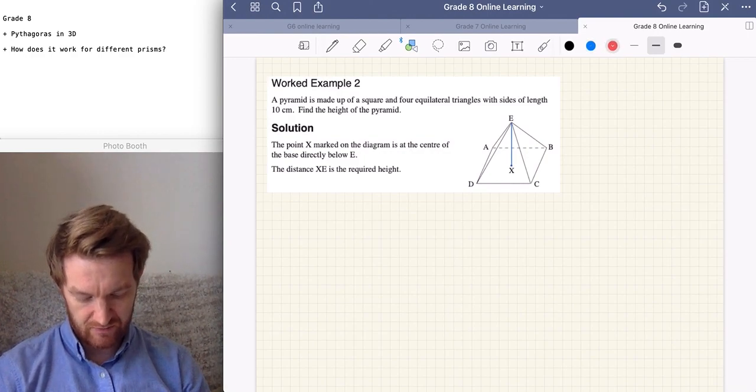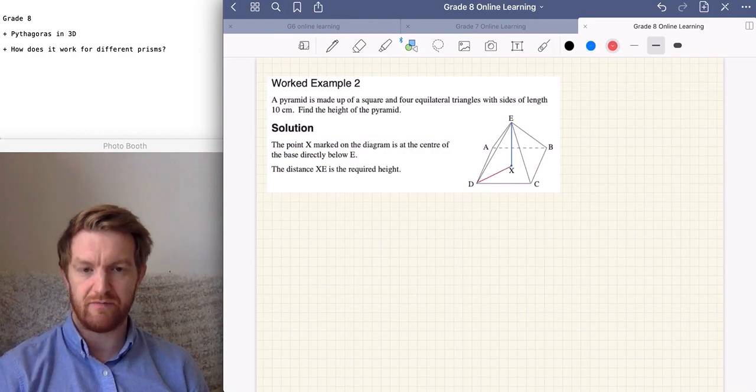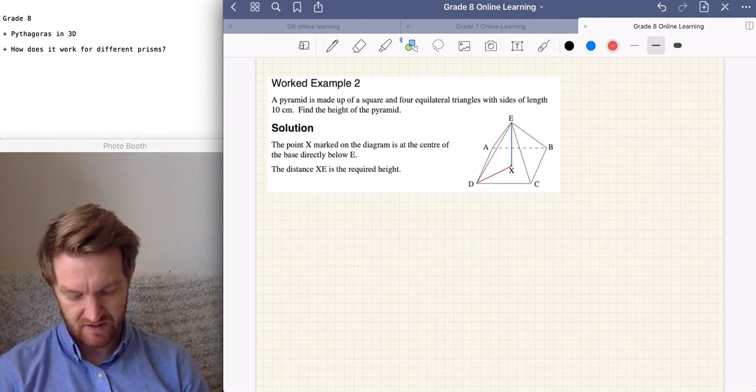But we're going to find this length here. To find this length here, we are also going to need, however, one of these lengths here in red. So, we're going to need our two sketches.